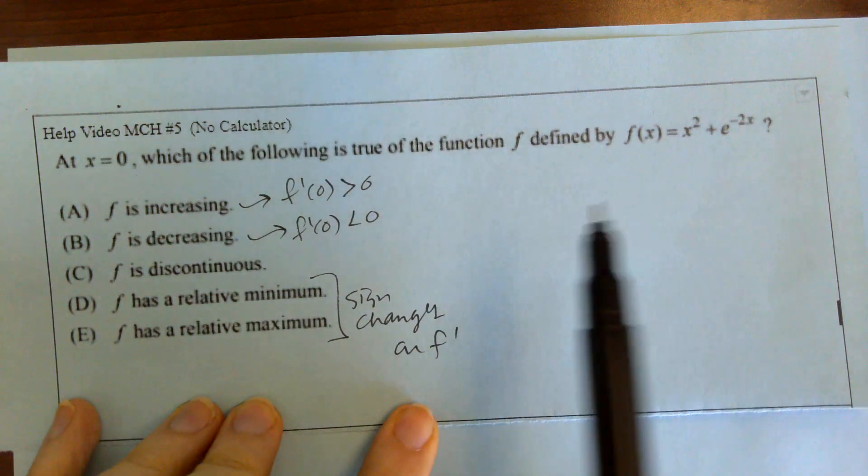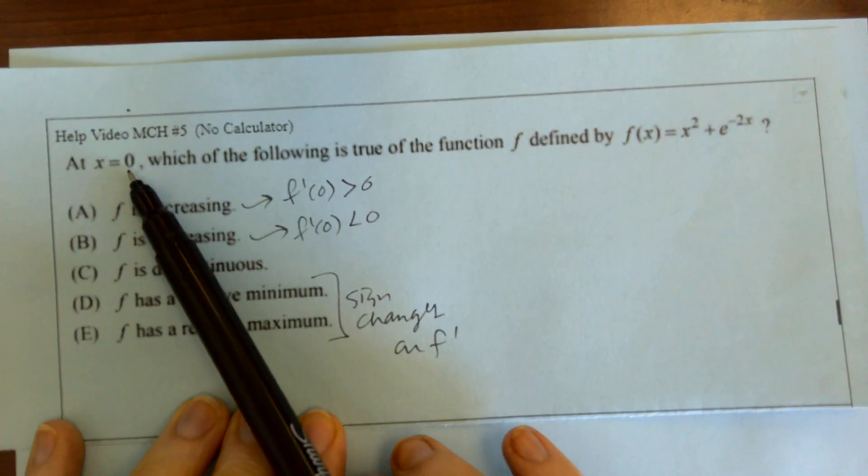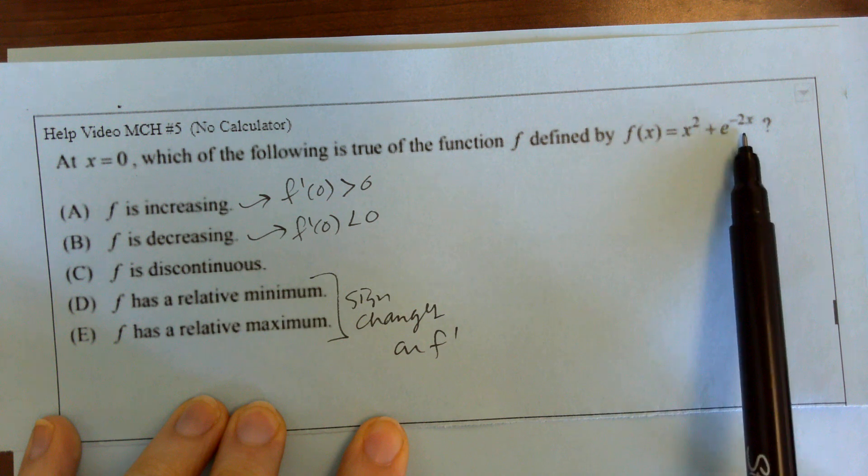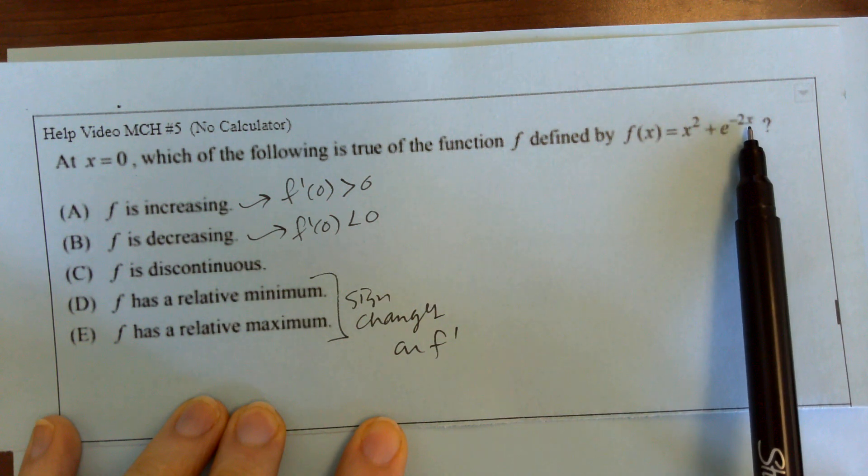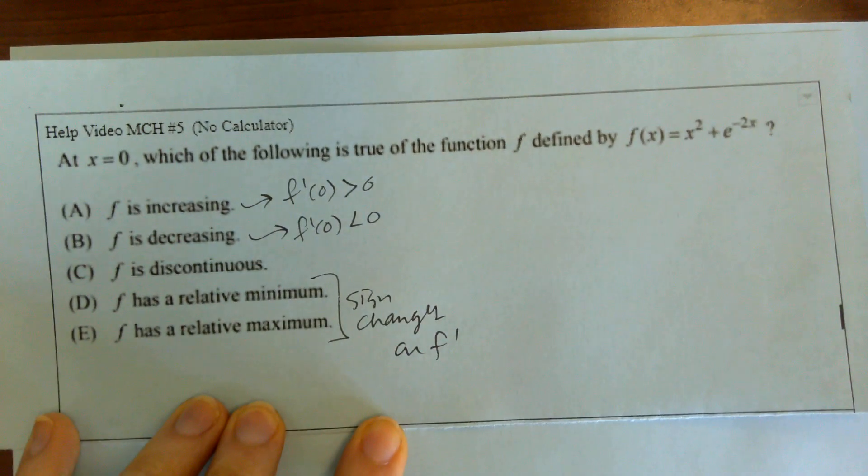Okay, so right away I see that's not going to happen. If you plug zero in here, you get zero. If you plug zero in here, e to the zero is one. So you'd end up getting one that's completely defined.